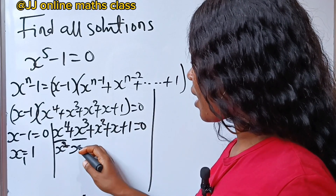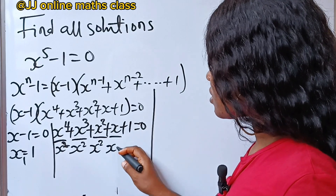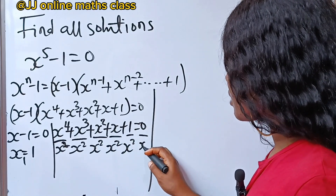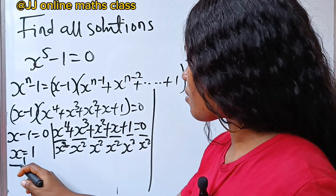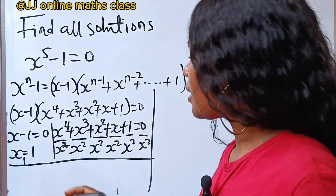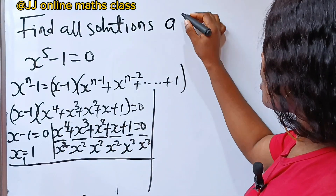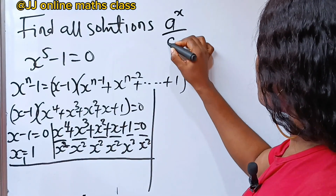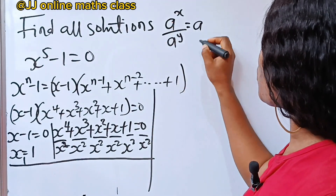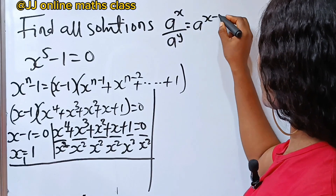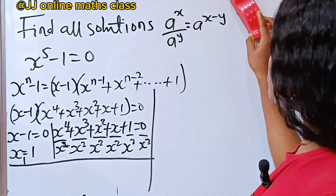Dividing every term by x squared. Now, x to the power of 4 divided by x squared — according to the law of indices, when they have the same base, you pick one base and subtract the powers.